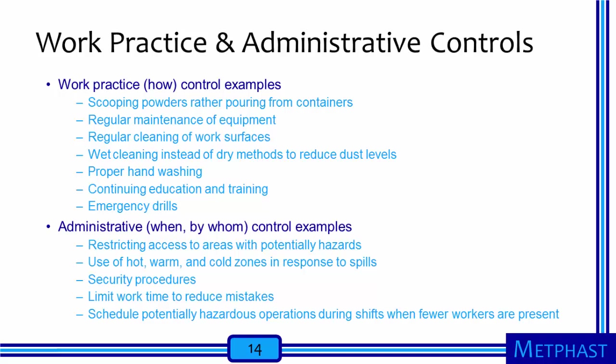Administrative controls are measures that change when and by whom work processes are conducted. Examples include restricting access to areas with potential hazards so that fewer people will be exposed, the use of hot, warm, and cold zones during the response to a hazardous material spill, security procedures to ensure that only people who are supposed to be at a work site are present, limiting work time to reduce mistakes due to sleep deprivation, and scheduling potentially hazardous work operations during shifts when fewer workers are present.